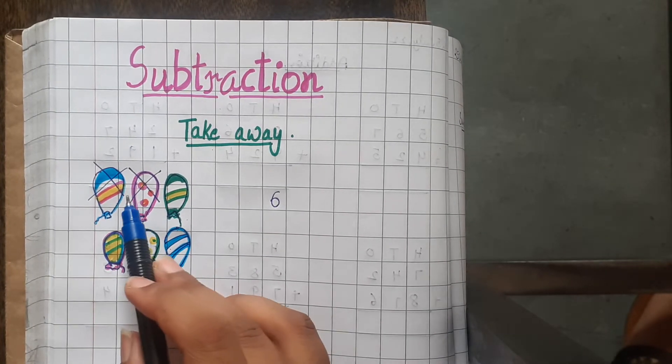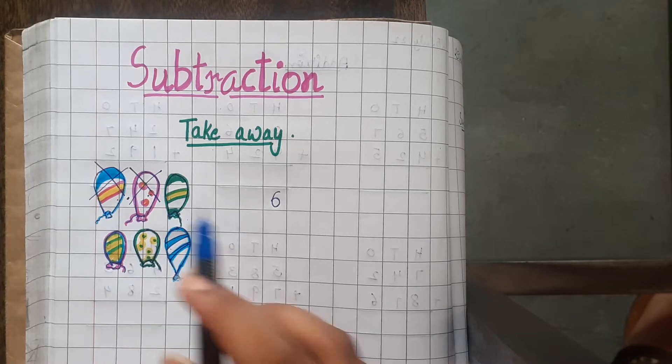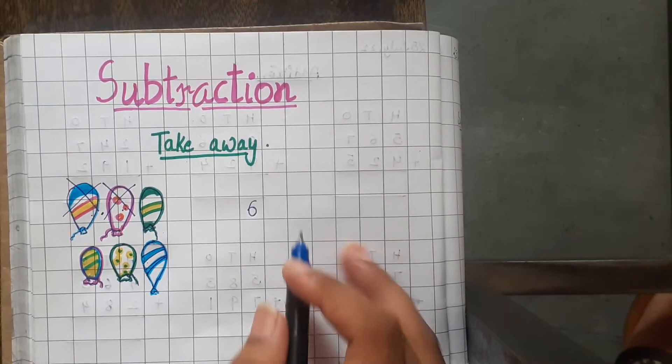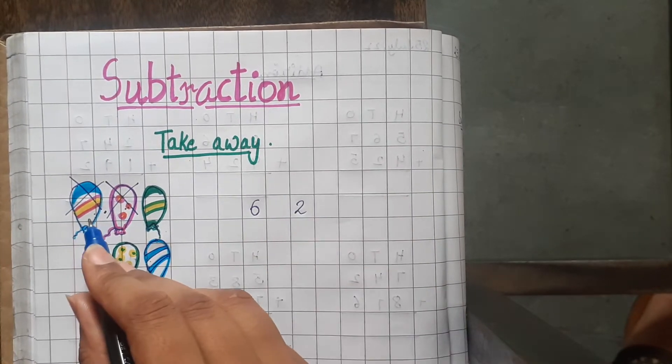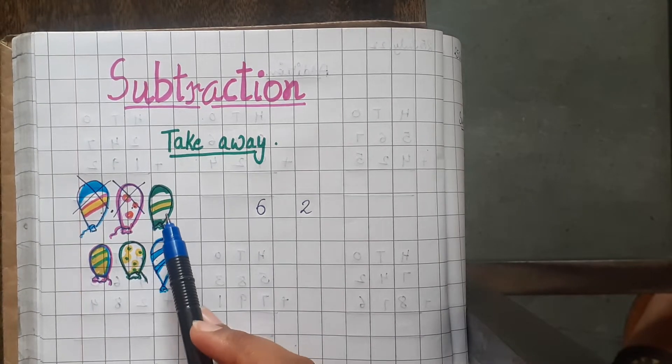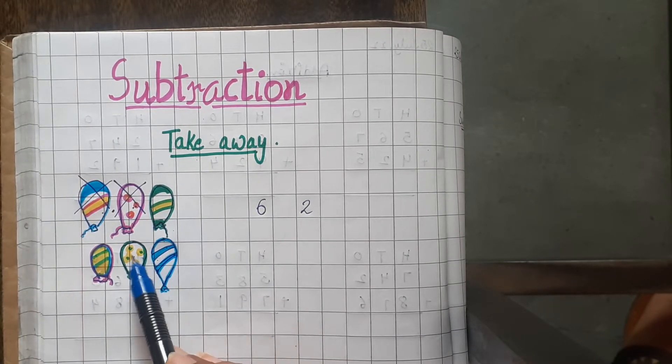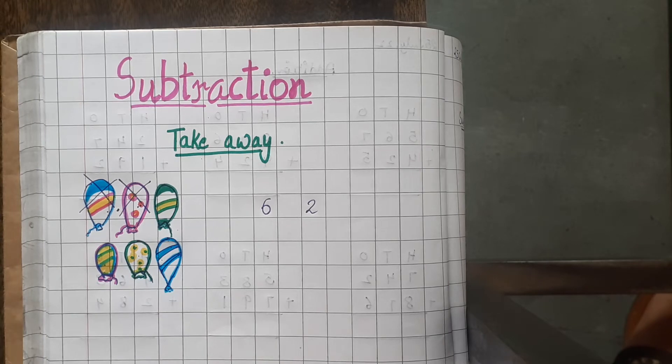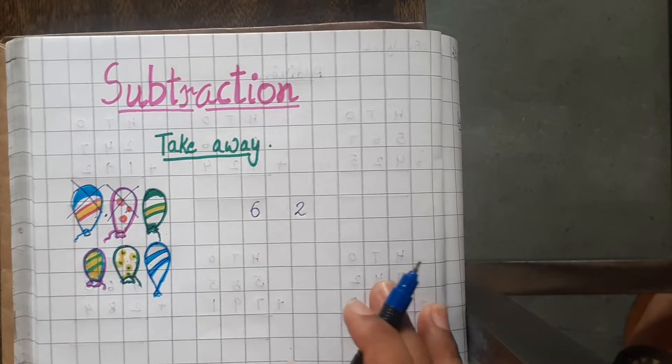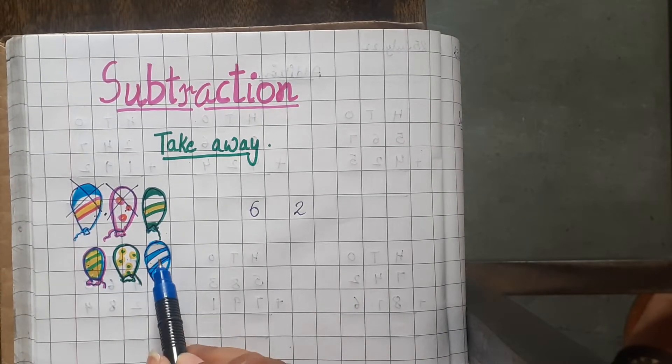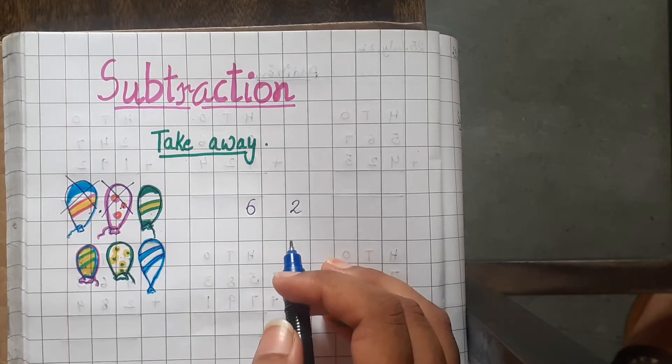So we removed, we took away 2 balloons. So 2 balloons are picked away. Counting the remaining: 1, 2, 3, 4. How many balloons are left? 1, 2, 3 and 4. 4 balloons are left.